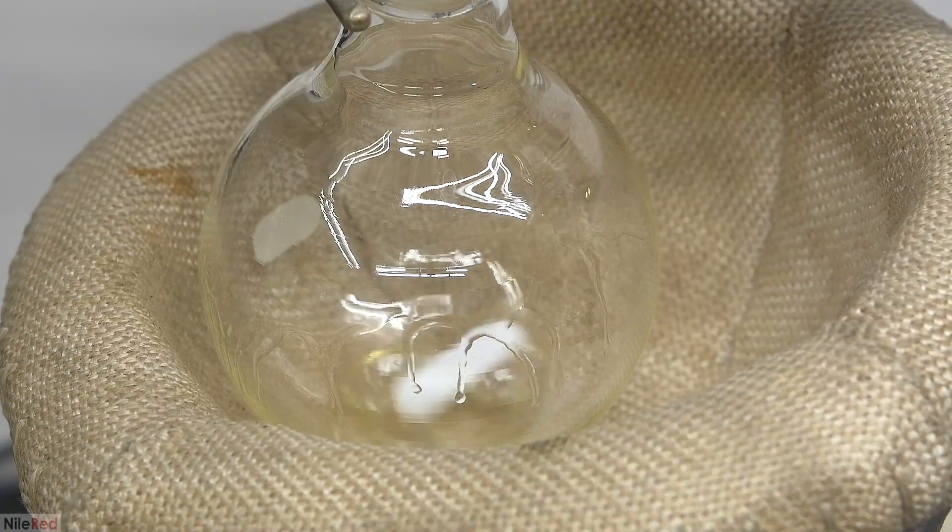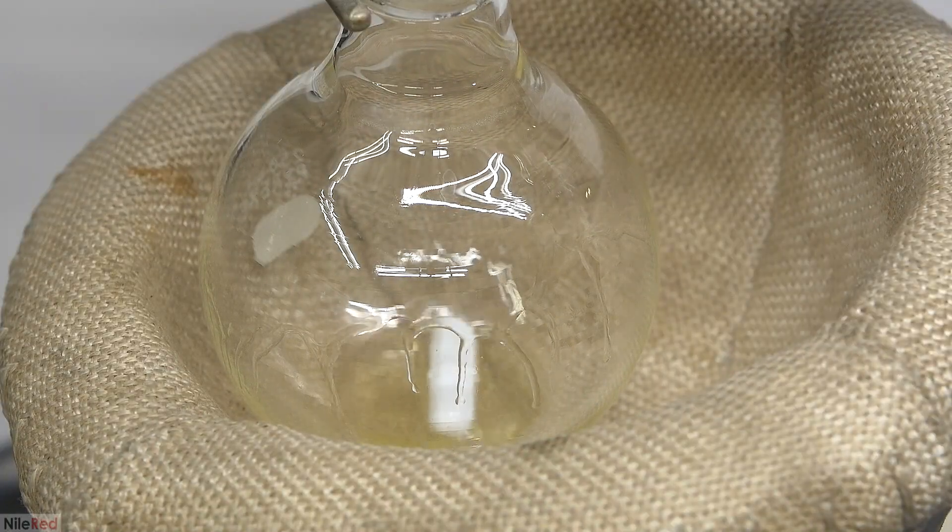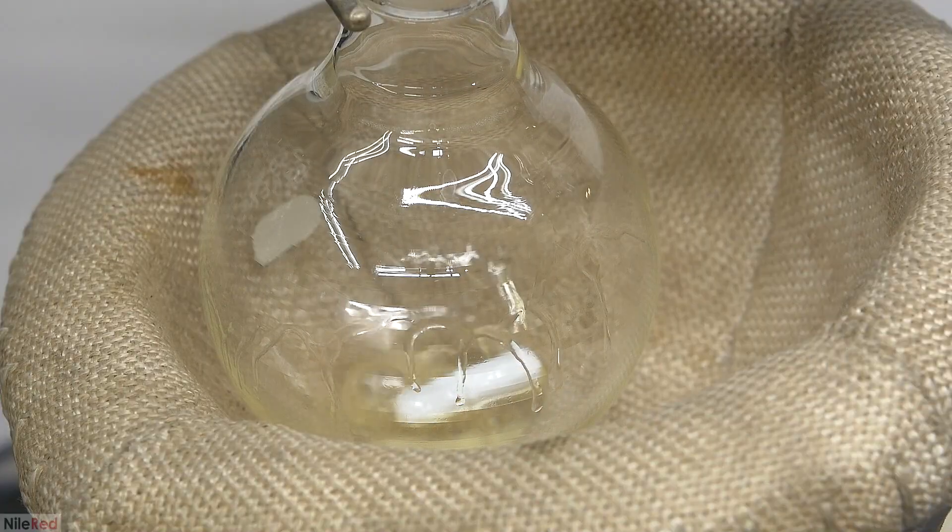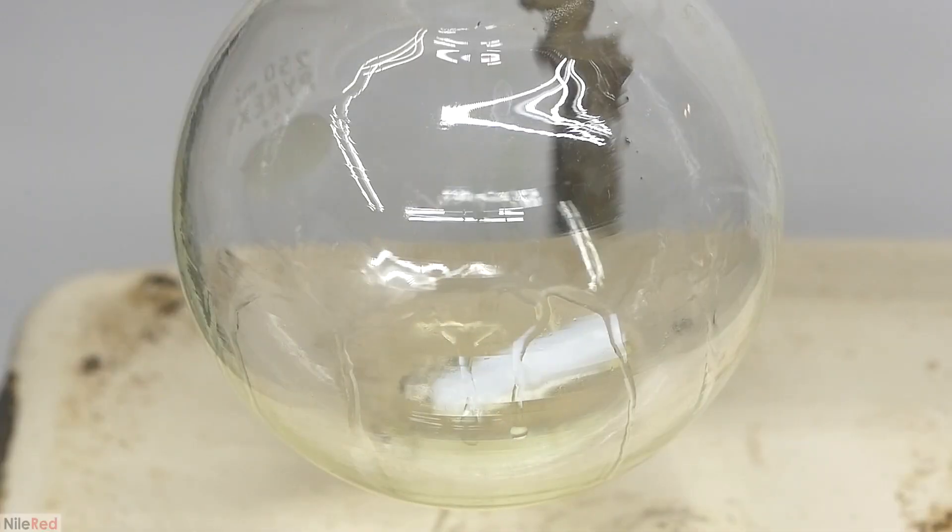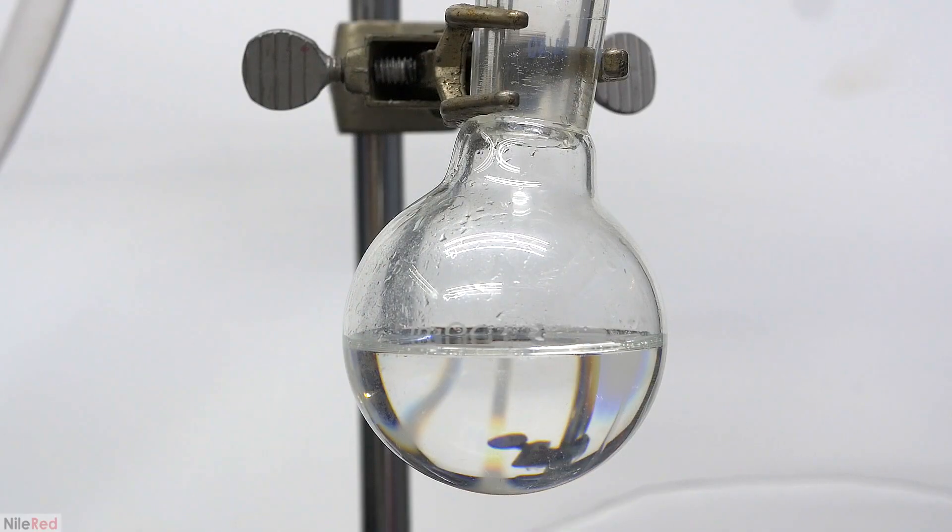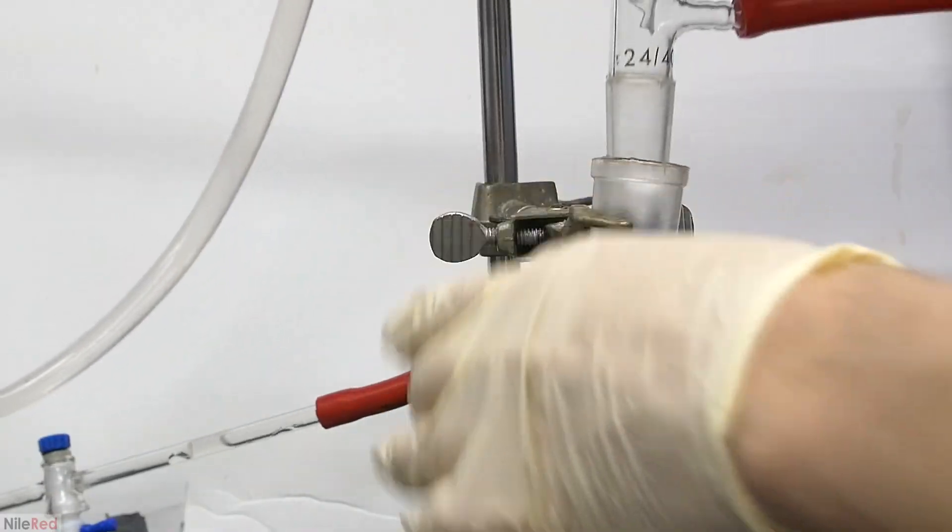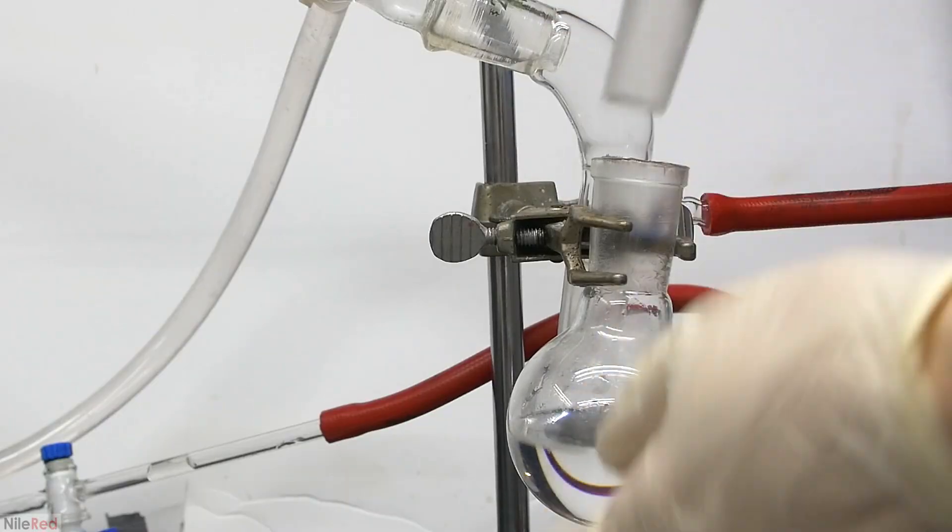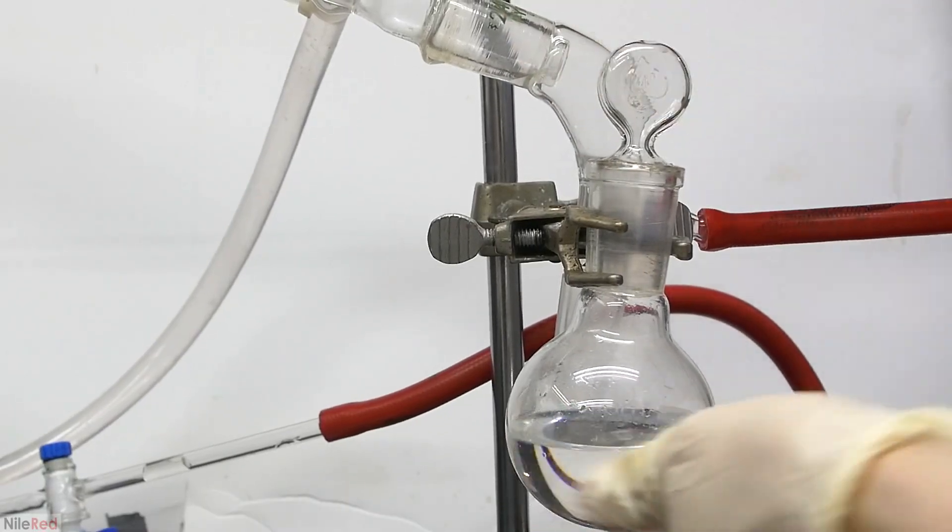Anyway, we keep the distillation going until there's only a very small amount left in the distillation flask. What we're left with is a small amount of yellow residue that crystallizes upon cooling. In our receiving flask, we have some nice crystal clear benzaldehyde. I turn off the vacuum pump, repressurize the system, and I seal the receiving flask with a stopper.